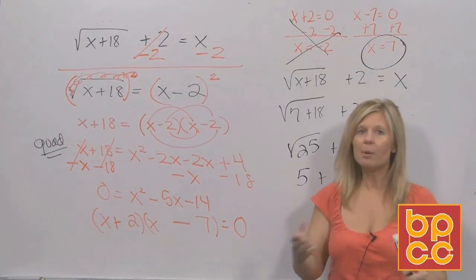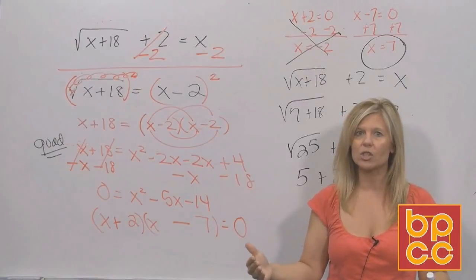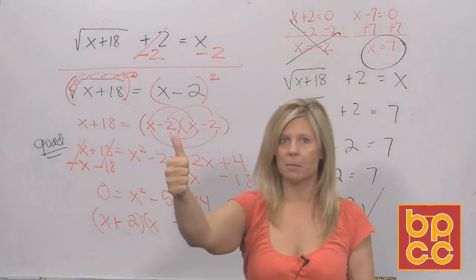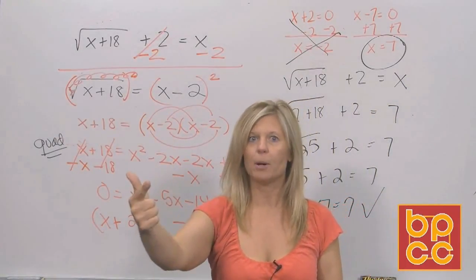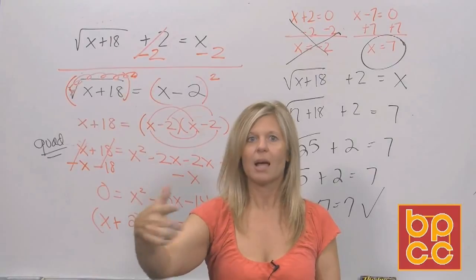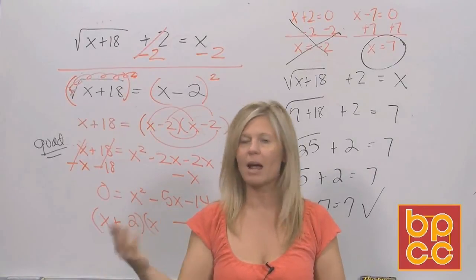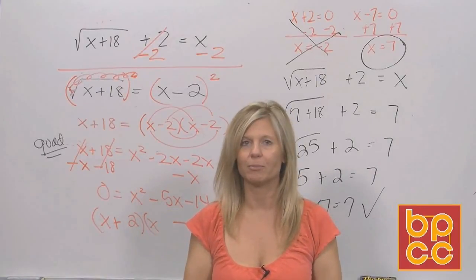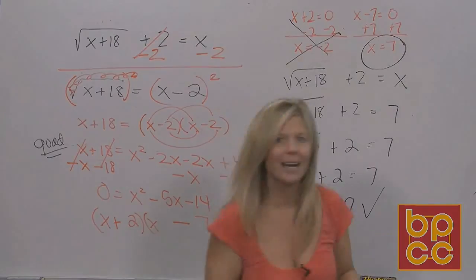To sum it up: to solve a radical equation, you isolate the symbol, you square both sides, and then it will probably become a linear or quadratic equation that you follow through on. I'll see you in module 5C. Bye.